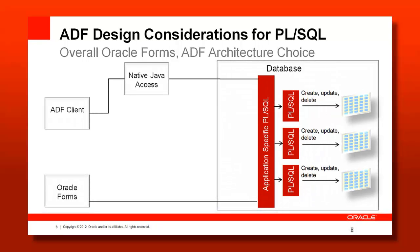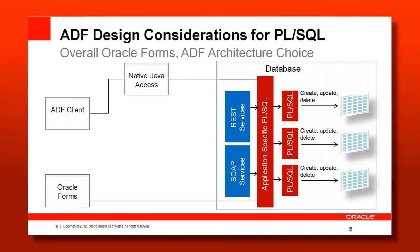Another client is of course ADF. ADF as a framework uses Java to access the database through the business service — the model layer. Java access ultimately goes through JDBC, which knows how to create a prepared statement to invoke stored procedures or functions and how to handle in and out parameters. One access option is native Java access, whether through TopLink, or a POJO where you manually handle JDBC. A second option is to expose your data through stored procedures as a service — either a SOAP service or a REST service.